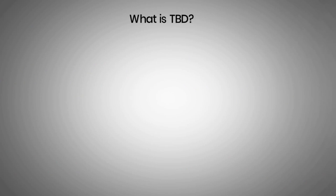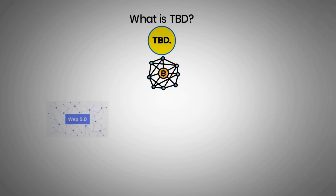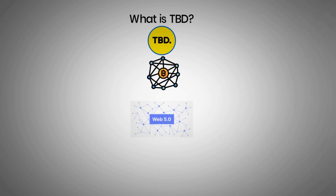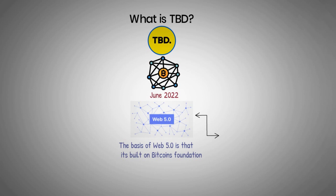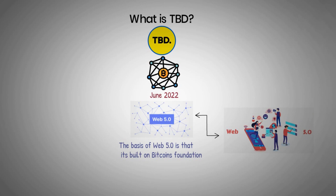What is TBD? TBD, a newly created platform, is the Bitcoin-focused subsidiary of Block Inc. TBD announced that it would begin work on Web 5.0 in June 2022. The basis of Web 5.0 is that it's built on Bitcoin's foundation. TBD states that Web 5.0 will enable data storage and decentralized identity for applications that individuals own. Developers will be able to create unique user experiences using the platform. Each user will have their own data and identity.